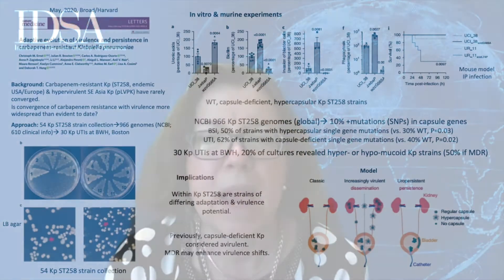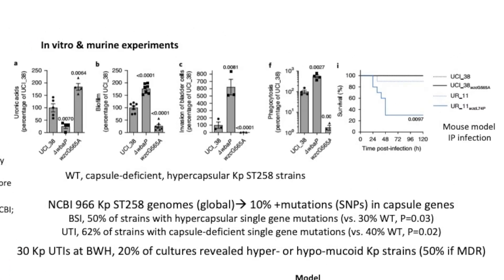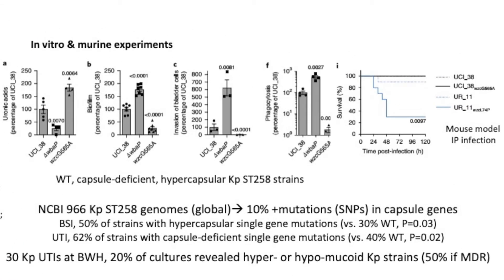Next, they tried to see how those strains behaved in a series of experiments, shown at the top right of the slide. In all these graphs, the very first bar is the wild type strain, the second bar is the capsule-deficient strain, and the third bar is the hypercapsular KP ST258 strain. They did some in vitro experiments, and the first one was looking at ureonic acids, which are a component of capsules, verifying that they had the phenotypes right.